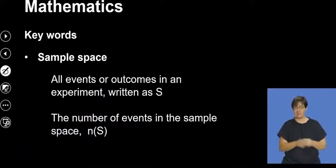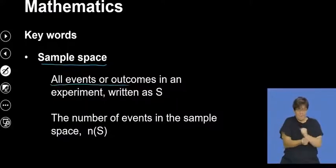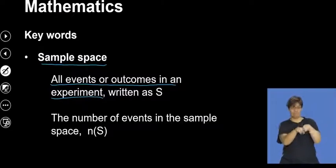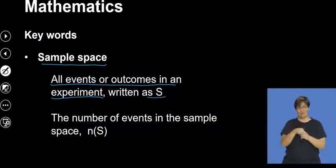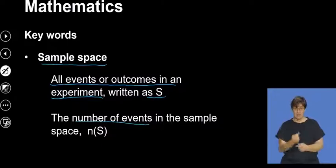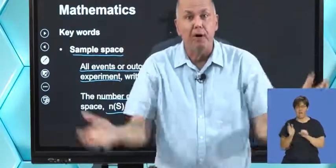The first thing we're going to look at is the idea of a sample space. A sample space is a collection of events or outcomes in an experiment. When we do probability calculations we usually do experiments, and all of those outcomes or events are part of the sample space. We write the sample space as S, and when we want to know the number of events, we write it as N(S).